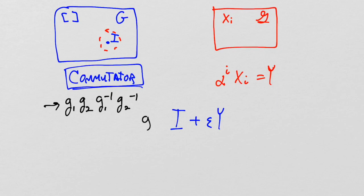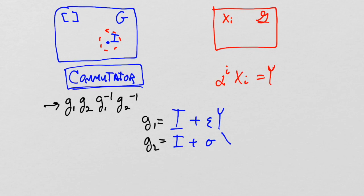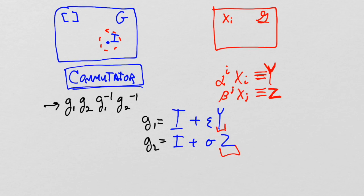Similarly, G₂ equals the identity plus a small number σ times a generator Z, where Z = βⱼXⱼ. Both Y and Z are elements of our vector space, and ε and σ are very small numbers. Now, to find G₁⁻¹, rather than writing I - εY directly, we assert that G₁ is defined exactly as I + εY in the infinitesimal sense, and then we find the inverse by computing the Taylor expansion of 1/(I + εY).